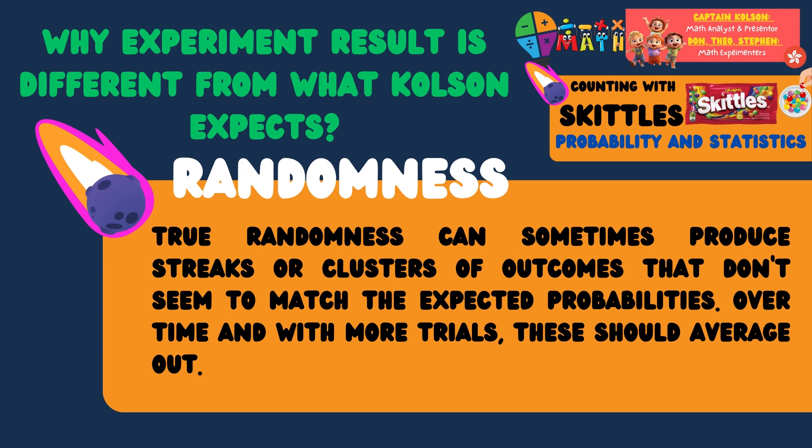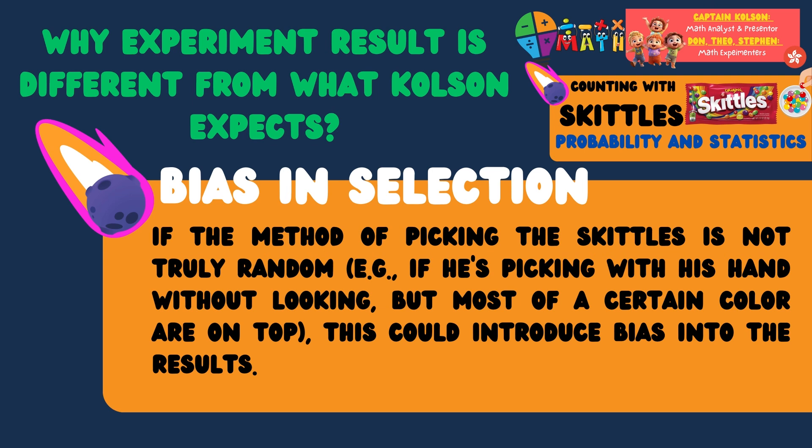True randomness can sometimes produce streaks or clusters of outcomes that don't seem to match the expected probabilities. Over time and with more trials, this should average out. If the method of picking the Skittles is not truly random — for example, if he is picking with his hand without looking, but most of a certain color are on top — this could introduce bias factors into the results.